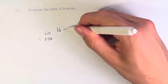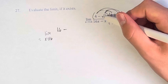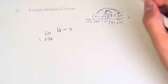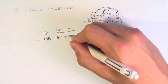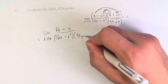And we're left with subtracting the square root of x squared. Square root of something squared is just the thing itself, so that's x, over 16x minus x squared times 4 plus the square root of x.